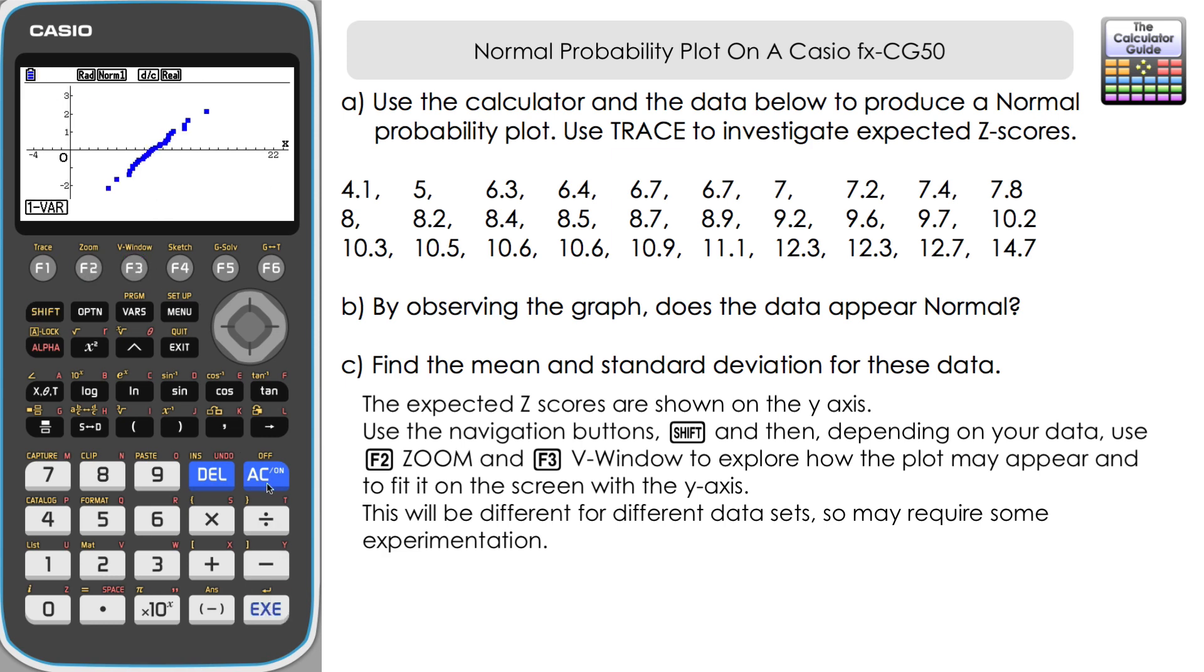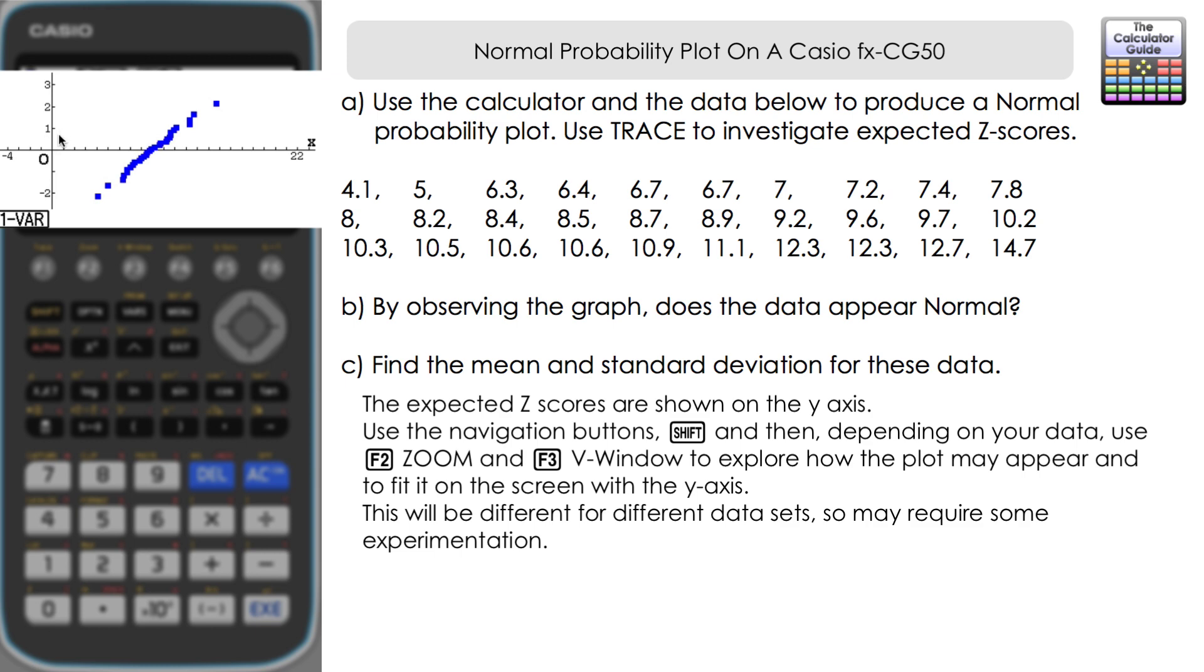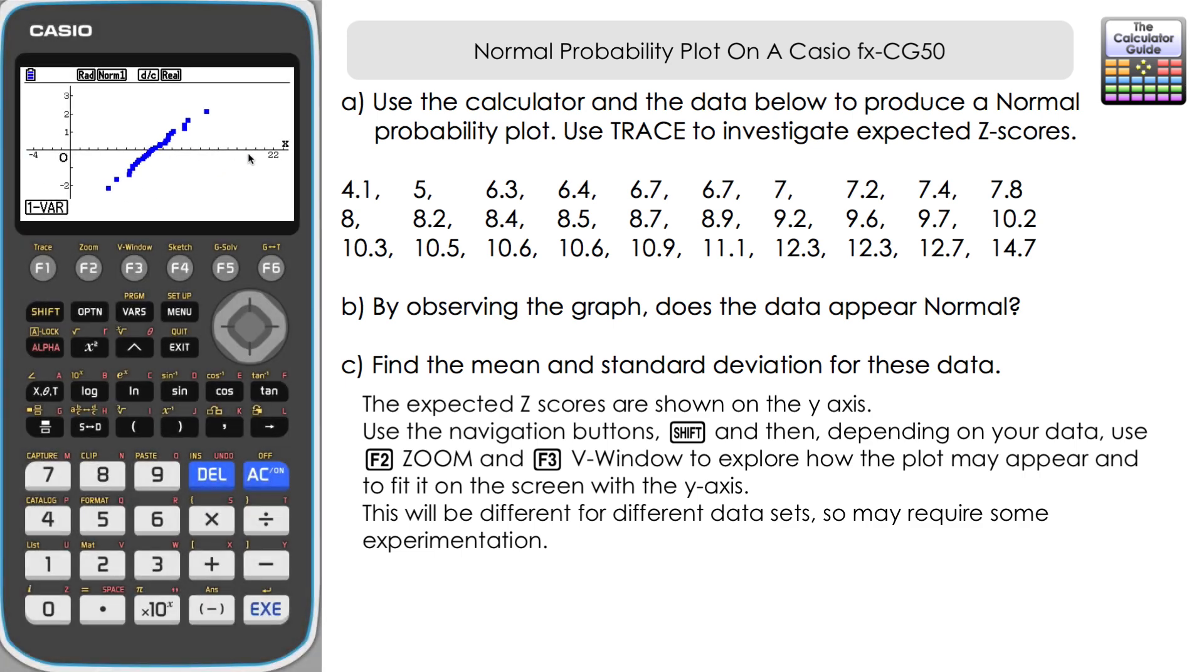You can see we've zoomed in, but the scale on the X axis has been compressed now and we can see it a little bit more clearly. We've got the same Y axis, but we can see all the data points on the plot there.